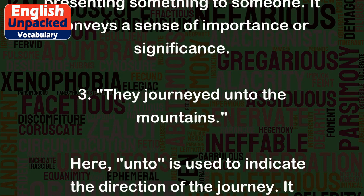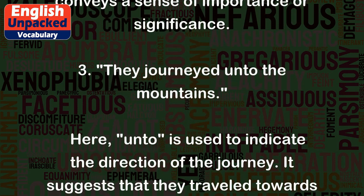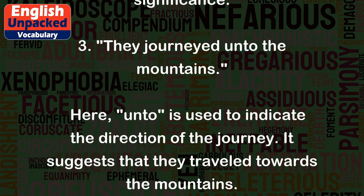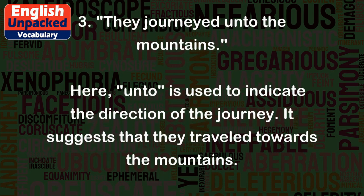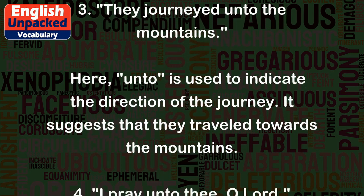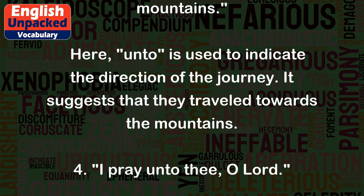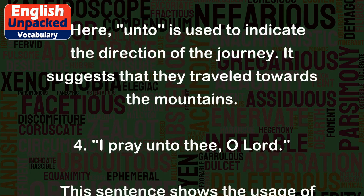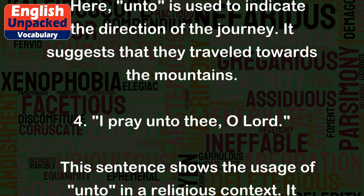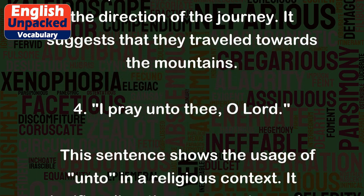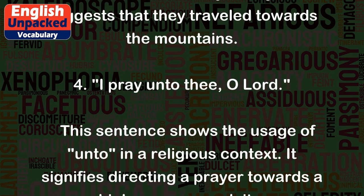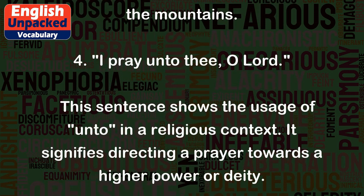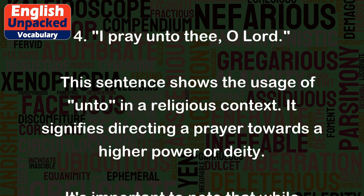Three: 'They journeyed unto the mountains.' Here, unto is used to indicate the direction of the journey. It suggests that they traveled towards the mountains. Four: 'I pray unto thee, O Lord.' This sentence shows the usage of unto in a religious context. It signifies directing a prayer towards a higher power or deity.